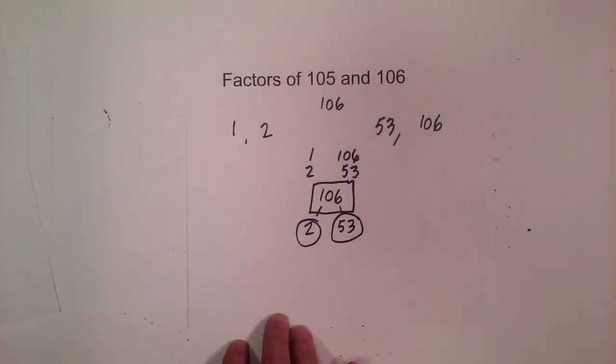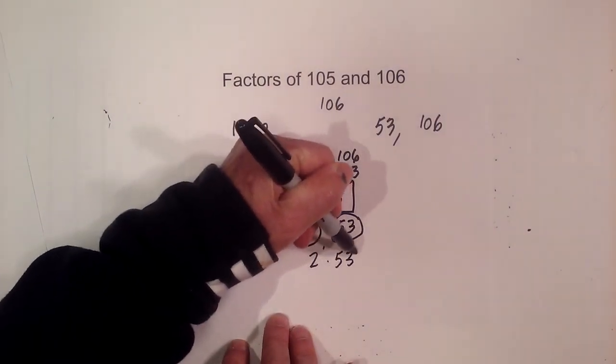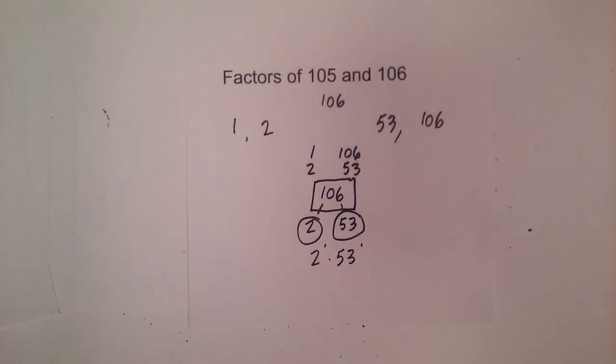So the prime numbers of 106 are 2 to the first times 53 to the first. I hope that helps with the factors of 105 and 106.